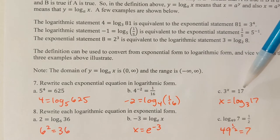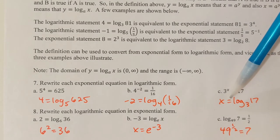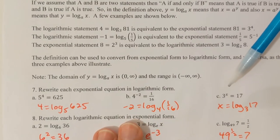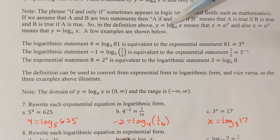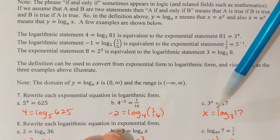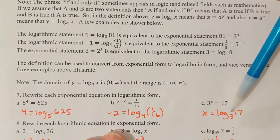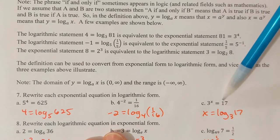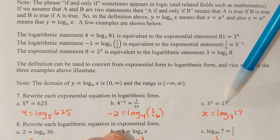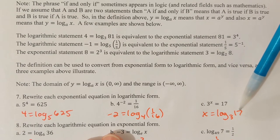Part c: 3ˣ = 17. The x is the power, so that goes alone on one side in the logarithmic form. So I'd say x = log_3(17), since 3 is the base and 17 is the input into the logarithm.